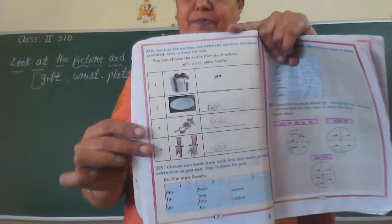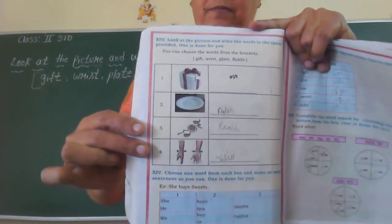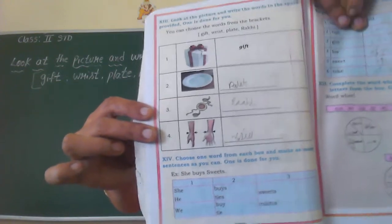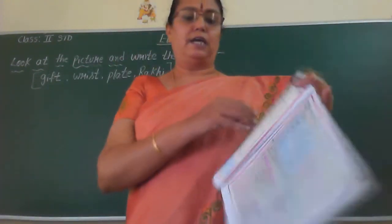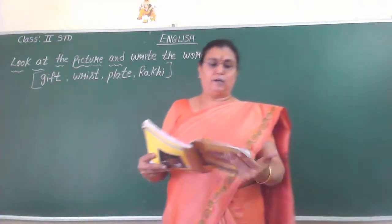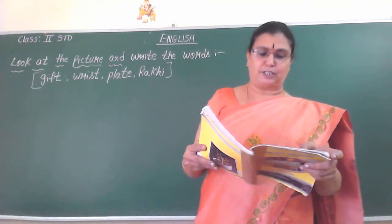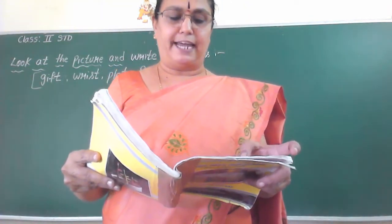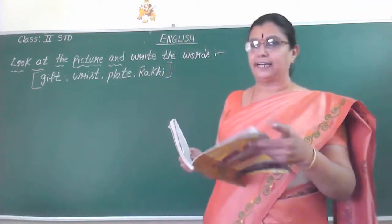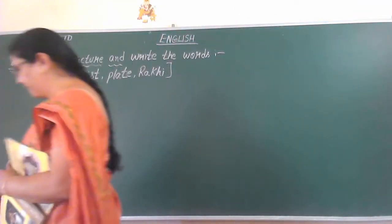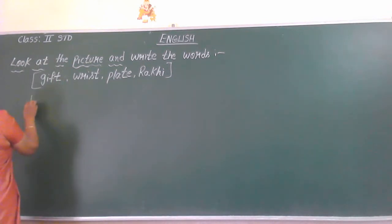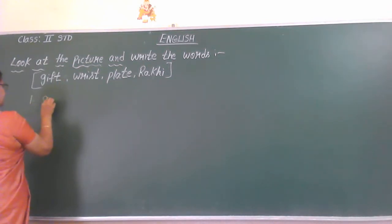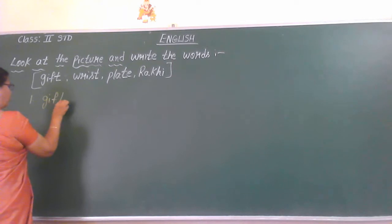Can you see this picture? Open your textbook children. If you haven't purchased it, please purchase it as early as possible. This is your textbook, page number 10. There are four pictures. The first one — they have a packed gift — the first example is already given.